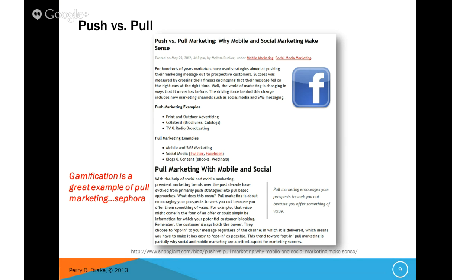With the help of social and mobile marketing, prevalent marketing trends over the past decade have evolved from primarily push strategies into pull. Pull marketing is about encouraging your prospects to seek you out because you offer them something of value — that value might be an offer or simply information the potential customer is looking for. The customer holds the power; they choose to opt into your message regardless of the channel, which means you have to make it easy for them to opt in. Gamification is another great example of pull marketing — it gamifies something to pull the person into the brand.